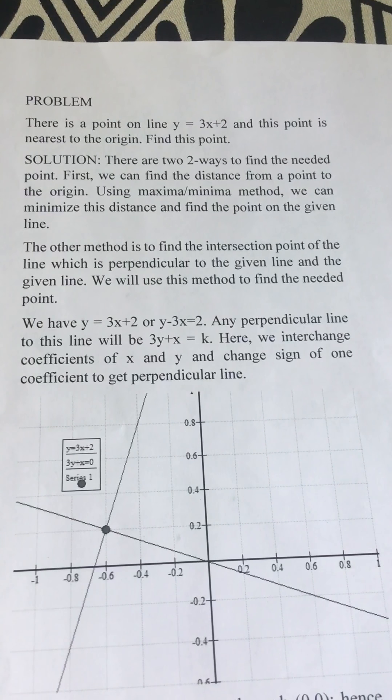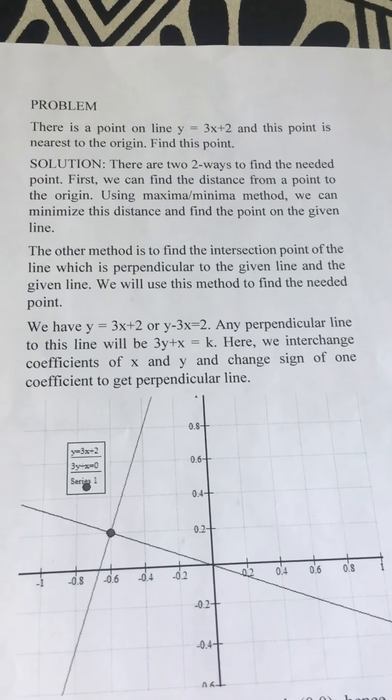How can we solve it? There are two ways to find the needed point. First, you can find the distance from the point to the origin using maxima minima method. You can minimize this distance and find the point on the given line.